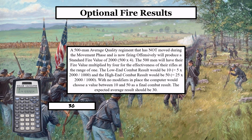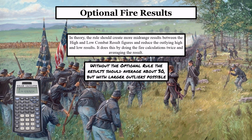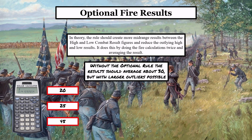In theory, the rule should create more mid-range results between the high and low combat result figures and reduce the outlier high and low results. It does this by performing the fire calculations twice and averaging the result. Without the optional rule, the results should average about 30 but with larger outliers being possible. For example, without the rule checked and firing three times, you could possibly get 20, 25, and 45 as your fire results. Those three all average 30, but you'll see there's an outlier of 45 — that's more likely possible without this optional rule because it only rolls the dice once.